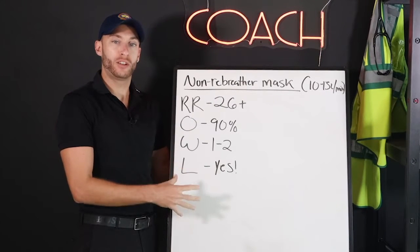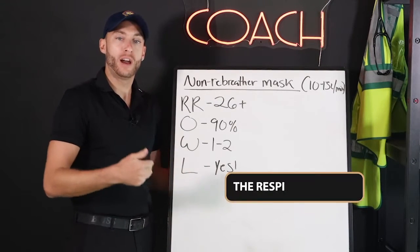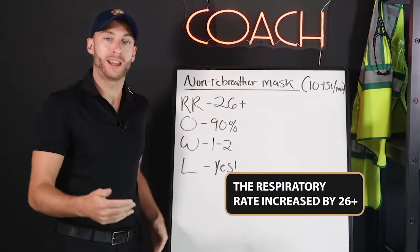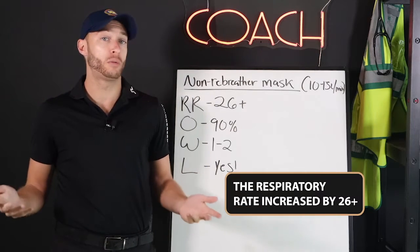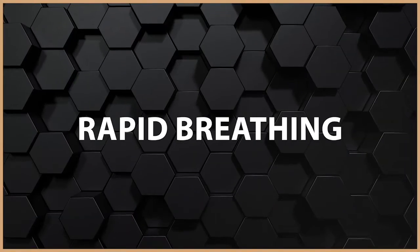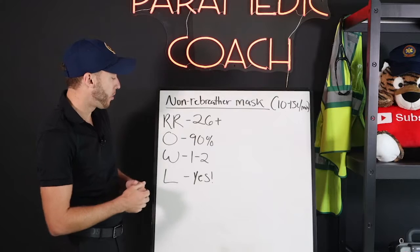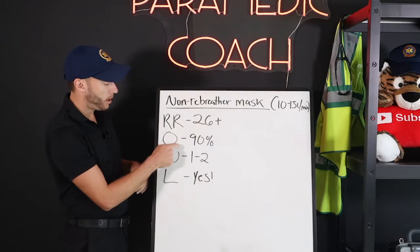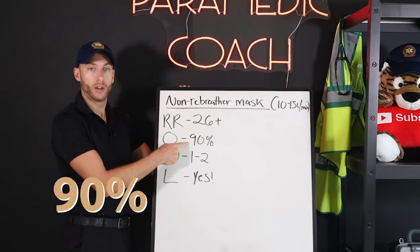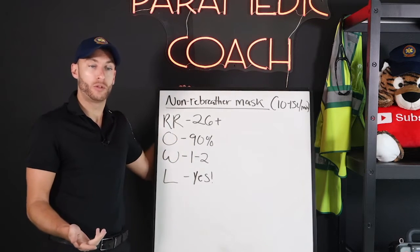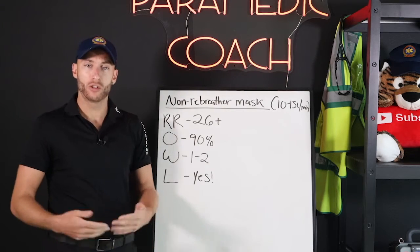With these patients in this presentation, we're seeing the respiratory rate increase — let's say 26 plus. So we have some rapid breathing going on. What else do we look at here? Well, we look at 90% — the SpO2 could be in the 90s or even lower in the 80s.